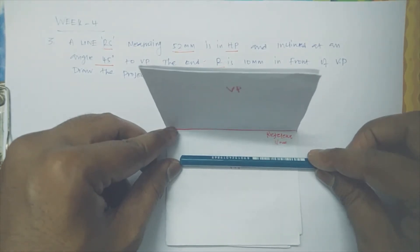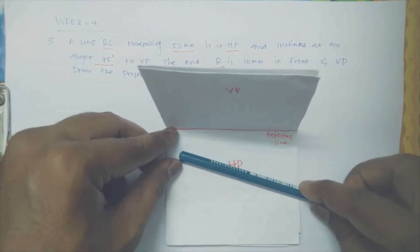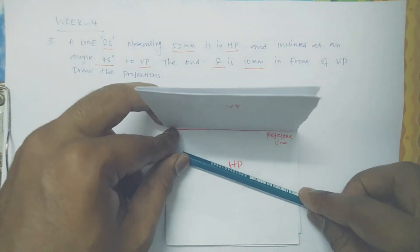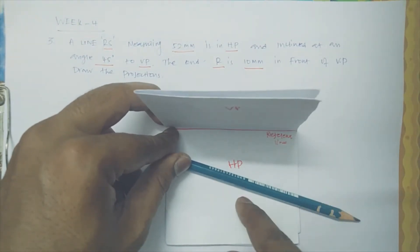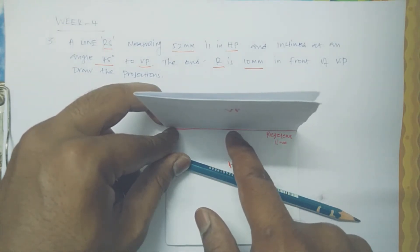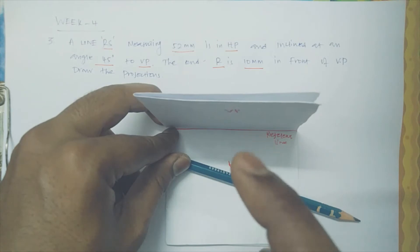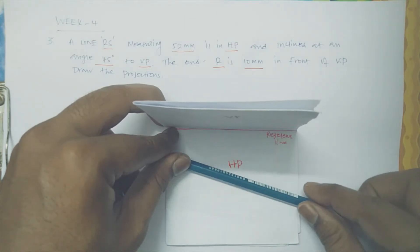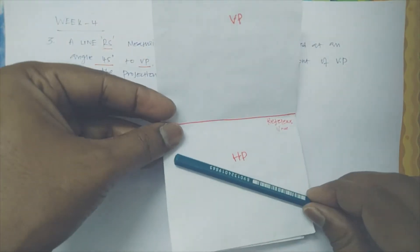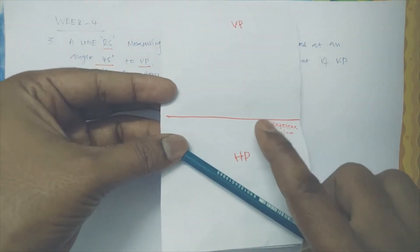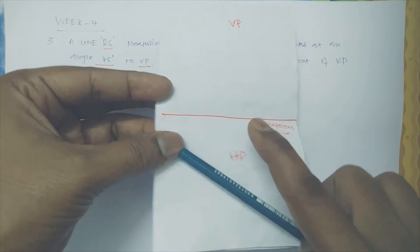And draw the projection. So it is at an angle of 45 degrees. When you are seeing from here, this angular line will be on the reference line. When you are seeing from top, you can see this angular line as it's in the HP. So when you are tilting the HP, you will see only this line and another projection on the reference line.